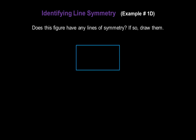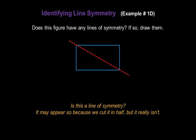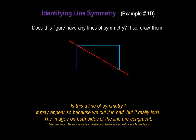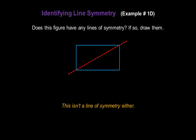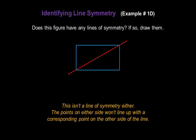Does this figure have any lines of symmetry? If so, let's draw them. Is this a line of symmetry? It may appear so because we cut the figure in half, but it really isn't. The images on both sides of the line are congruent; however, they aren't mirror images of each other. This isn't a line of symmetry either, and here's why: the points on either side won't line up with a corresponding point on the other side of our line.